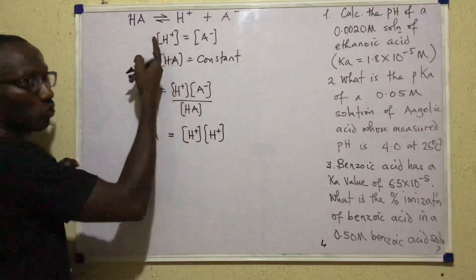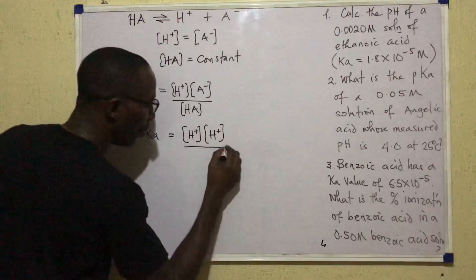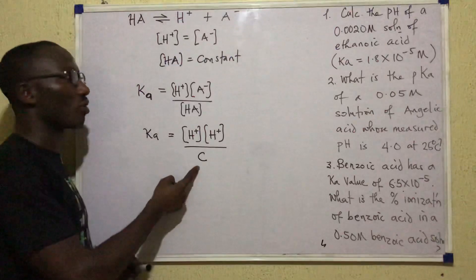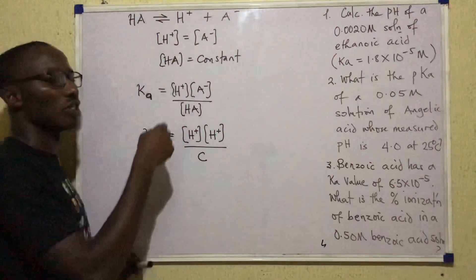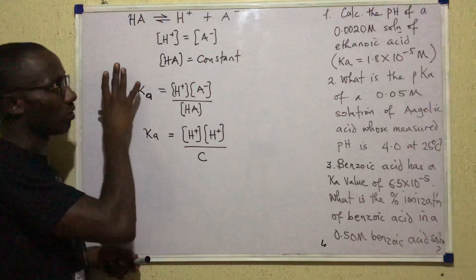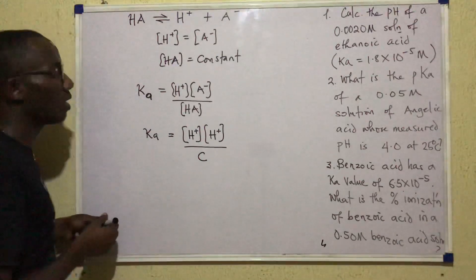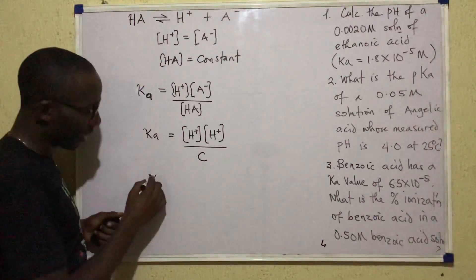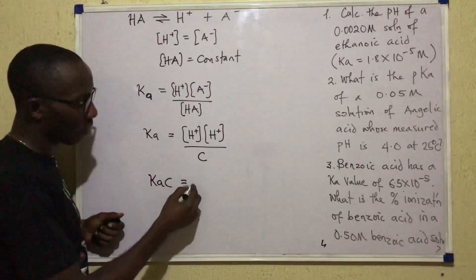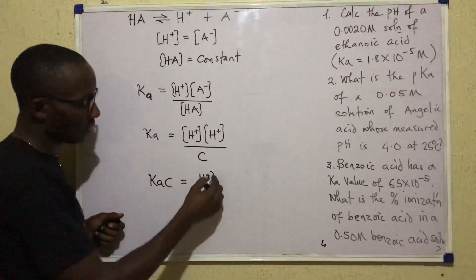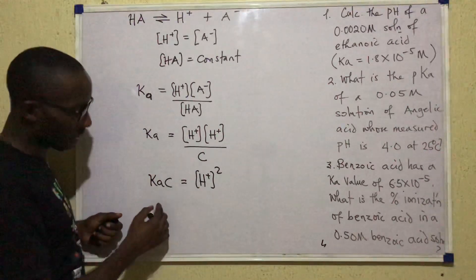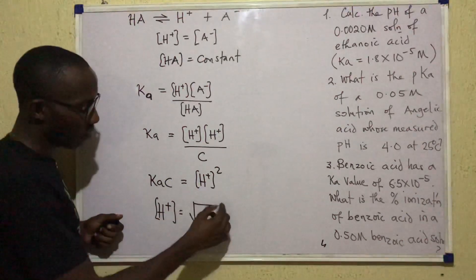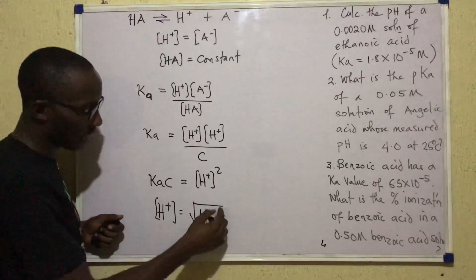From here, since H+ concentration equals A- concentration, I can write Ka equals H+ concentration squared over C, where C is the original concentration (molarity) of the acid dissolved. By cross multiplication, KaC equals H+ concentration squared. So making H+ the subject: H+ equals the square root of Ka times C.